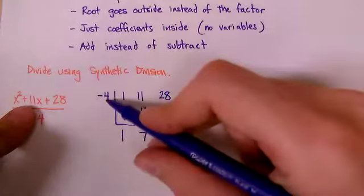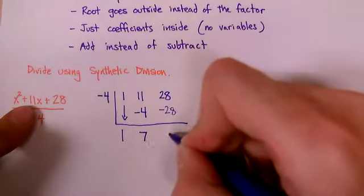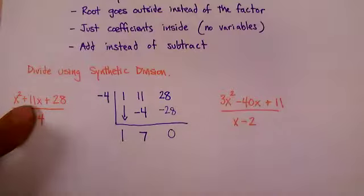You get a seven there. 11 plus negative four. And then you do this times this, negative four times seven is negative 28. You get finally a zero and the problem is done.